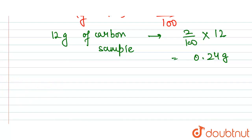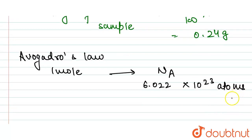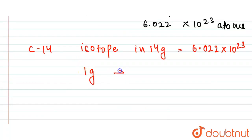By Avogadro's law, 1 mole of any compound has Nₐ — the Avogadro number, 6.022 × 10²³ particles. These particles can be atoms, ions, or anything. For C-14, 14 grams contains 6.022 × 10²³ atoms. So in 1 gram, it will be 6.022 × 10²³ divided by 14.